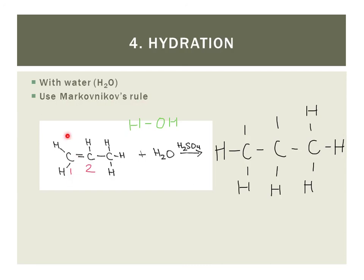Now, we can see that carbon 1 has two hydrogens, whereas carbon 2 only has one hydrogen. So, if we want the rich to get richer, we know that the hydrogen from our water molecule will end up on carbon 1, and the hydroxyl group or the OH group is going to end up on carbon 2. And now, we have a new type of molecule. We have an alcohol, and we're going to learn how to name those a little bit later.